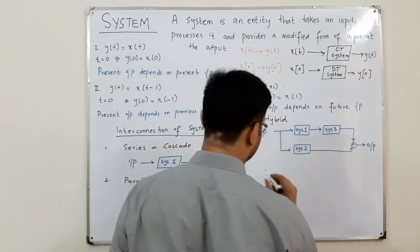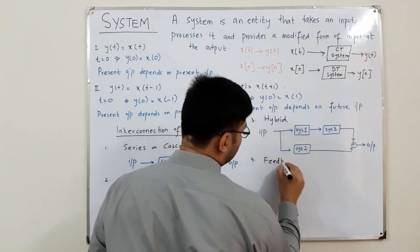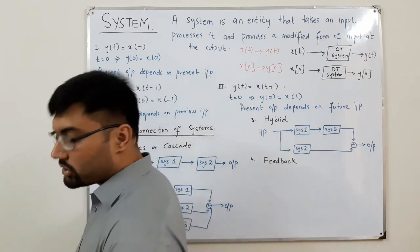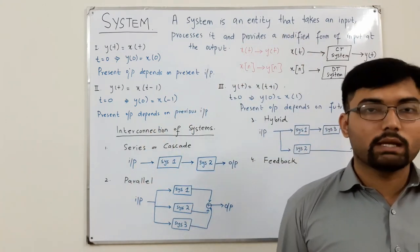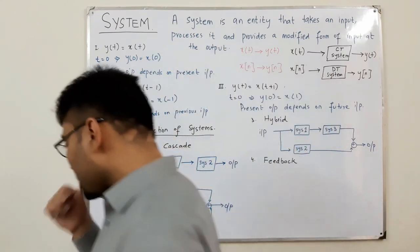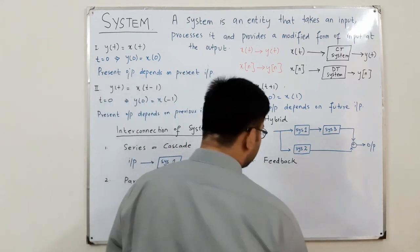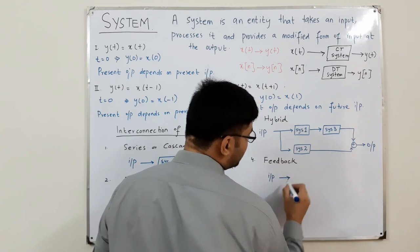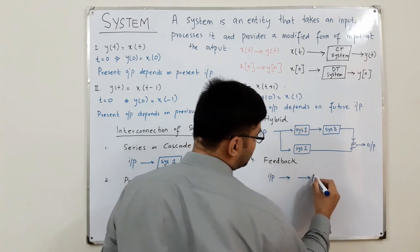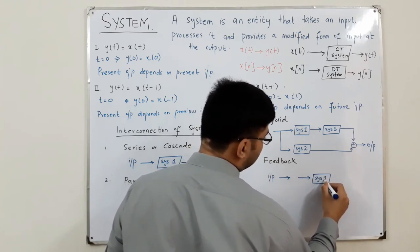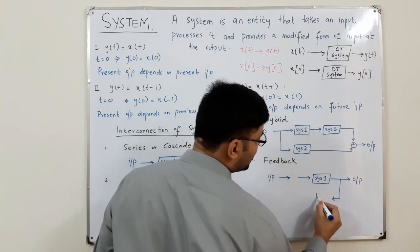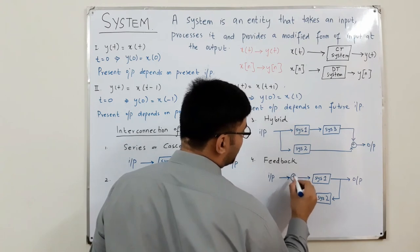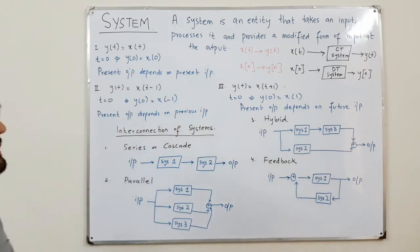The fourth type is the feedback system. As you may have seen in digital logic design — counters, flip-flops, registers all use feedback. Here, the input is not fed directly into the system. Instead, the current output is taken, fed into another system (System 2), and its result is added with the current input before being provided to System 1.